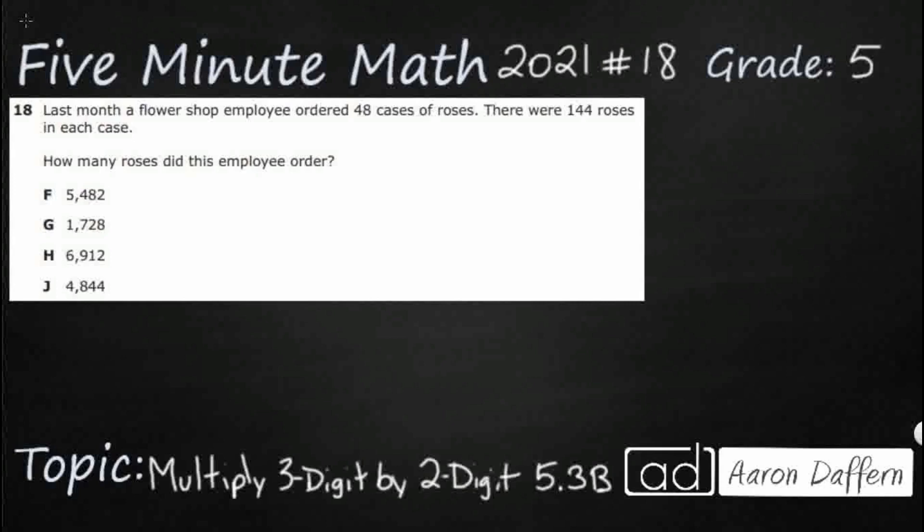So we had a flower shop employee ordering 48 cases. There are 144 roses and here's our clue word, in each case. That means we're dealing with equal groups. And even if we thought maybe this is division, take a look at all your answer selections. They are all much larger, which means we're going to need to multiply these two numbers.